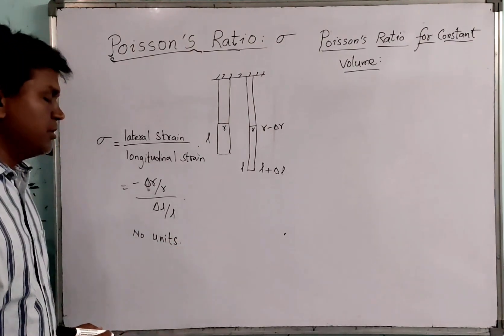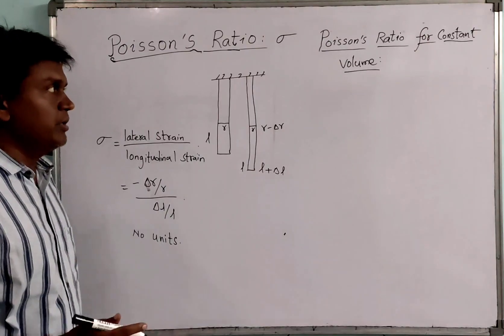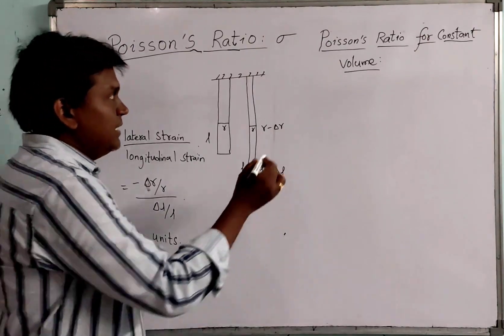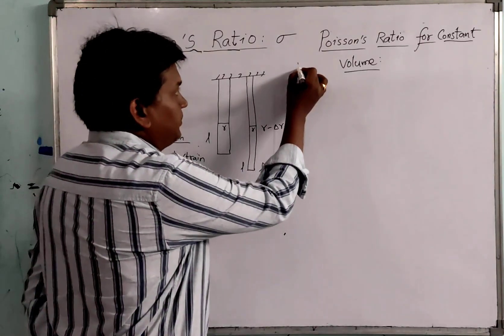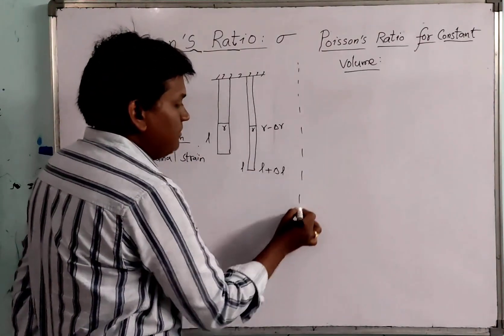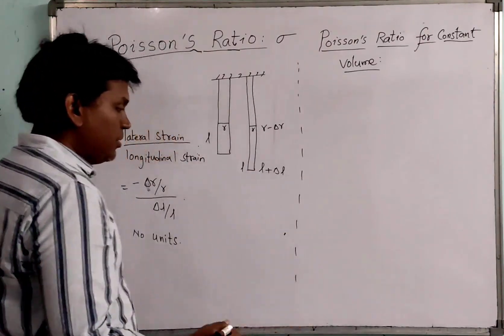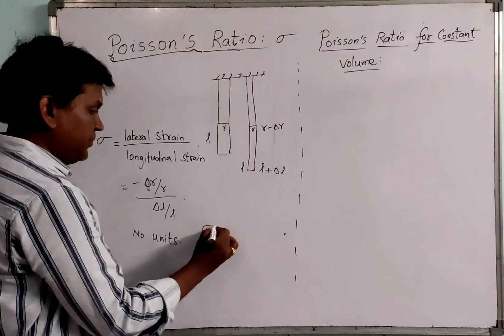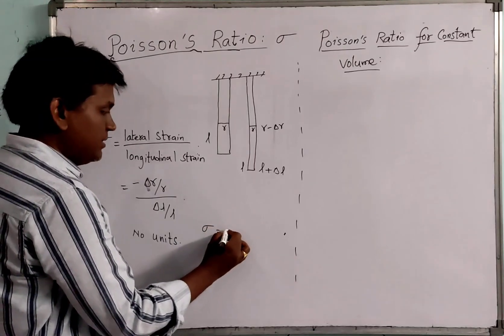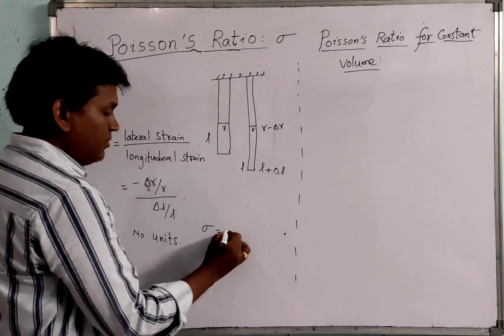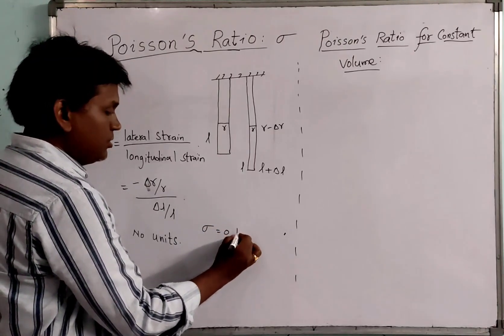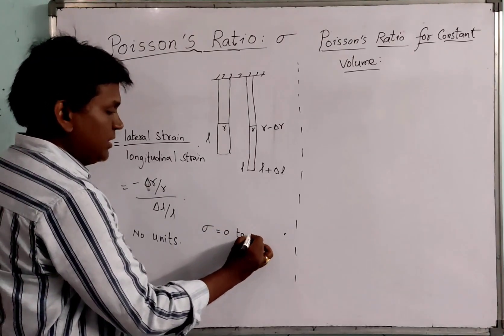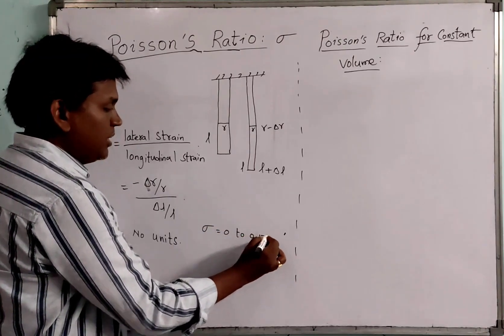Poisson's Ratio has no units, as it is the ratio of two strains. The value of Poisson's Ratio ranges from 0 to 0.5.